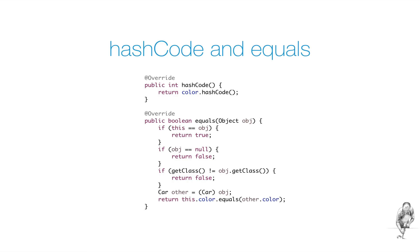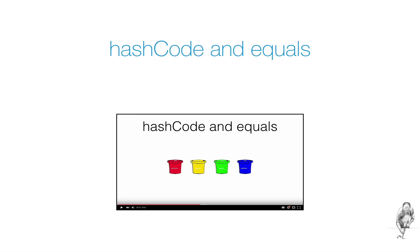This is not because the Java creators thought that would be a good idea, just because they didn't have any other option. When they wrote the class object, our car class didn't exist yet. If you want to know more about hashCode and equals, click on the image to watch my video.